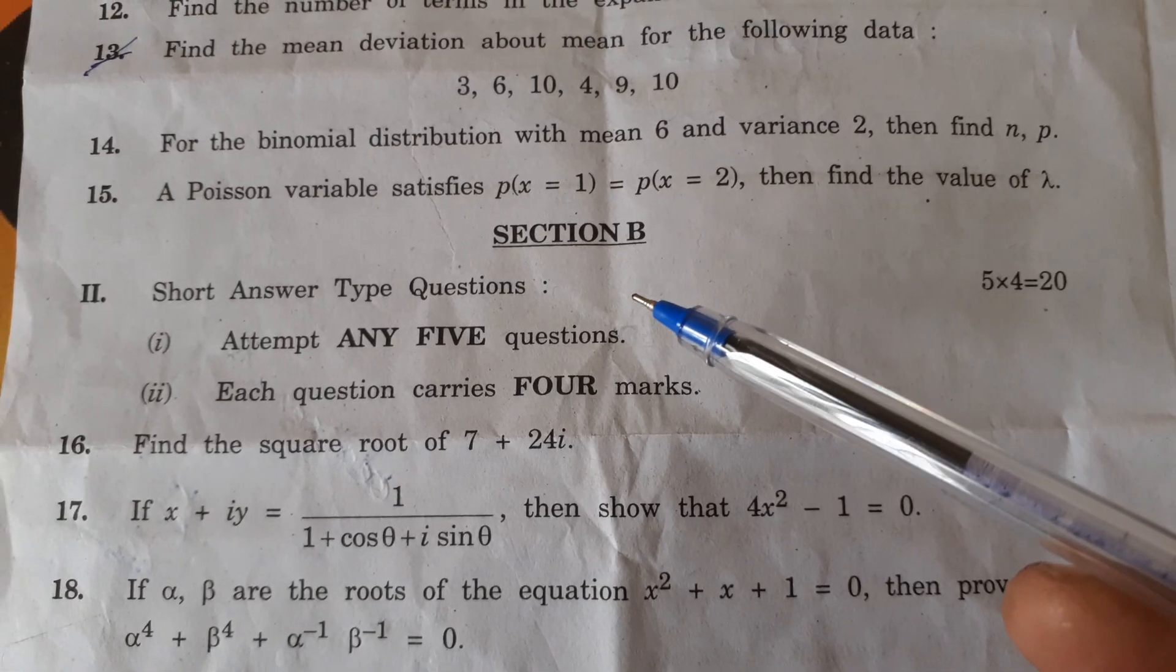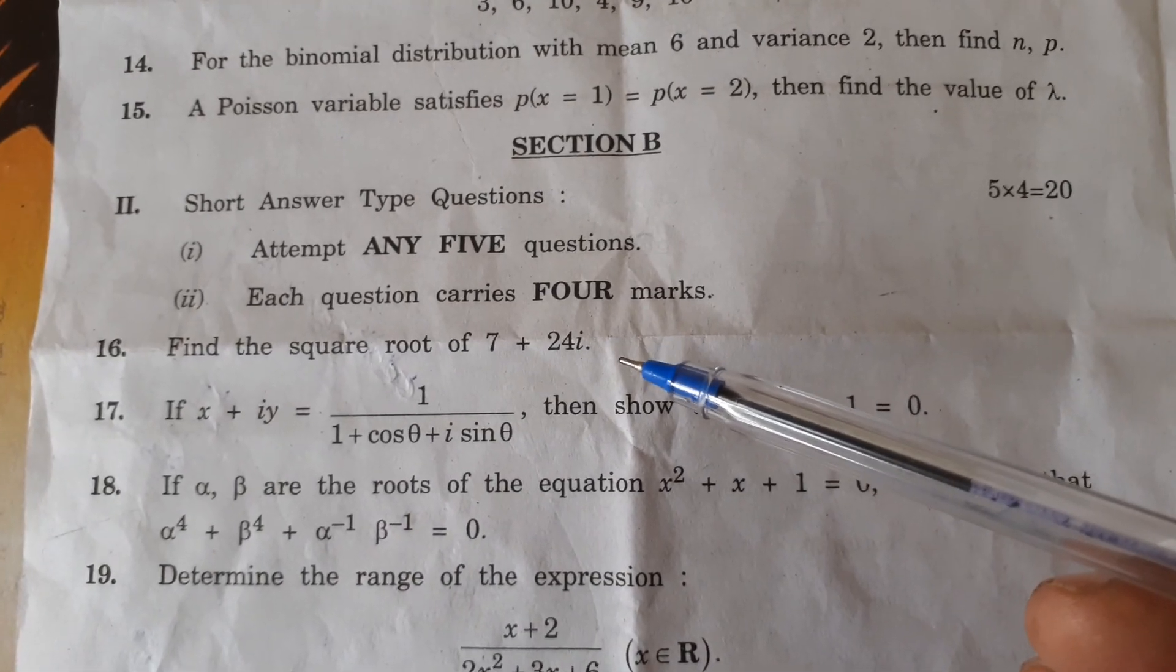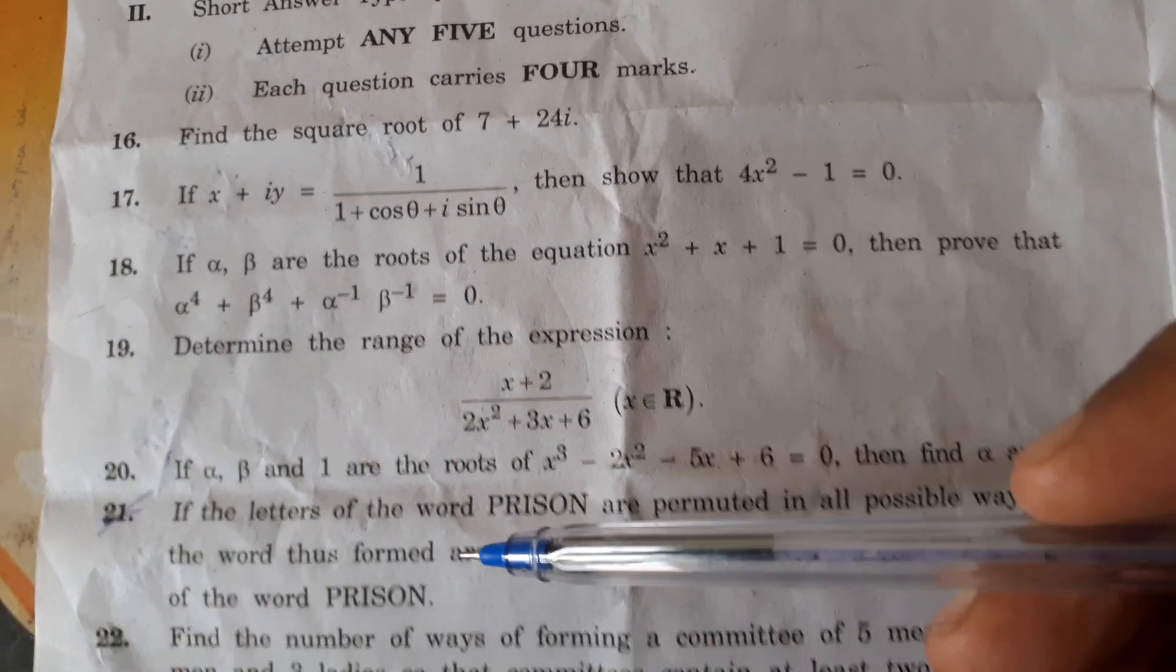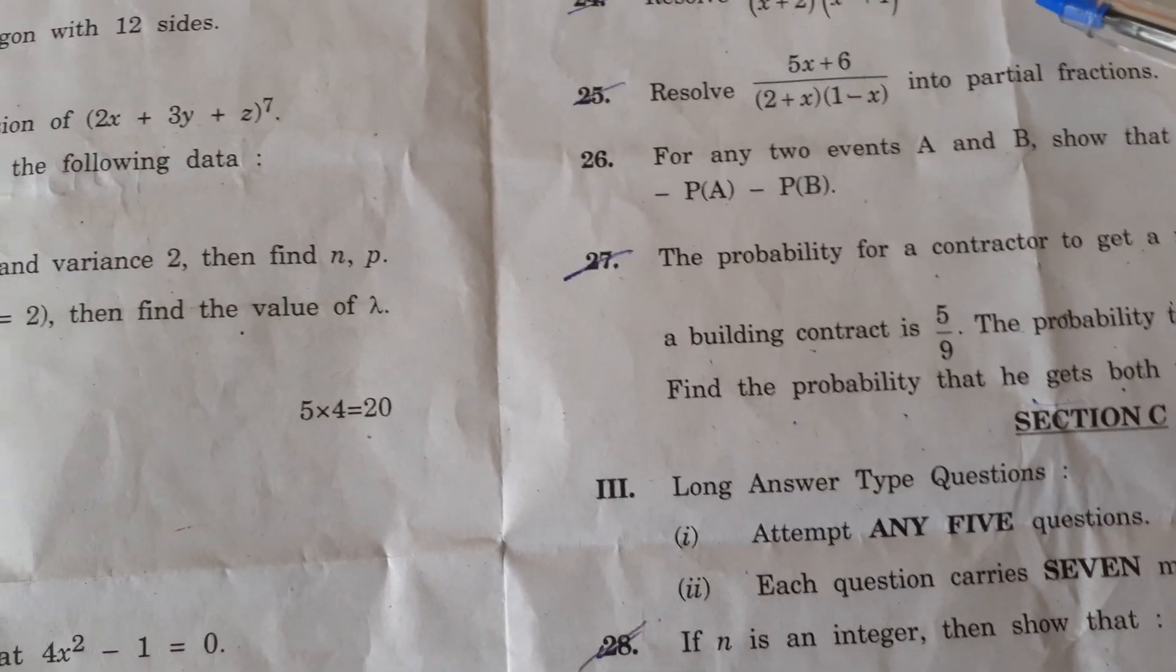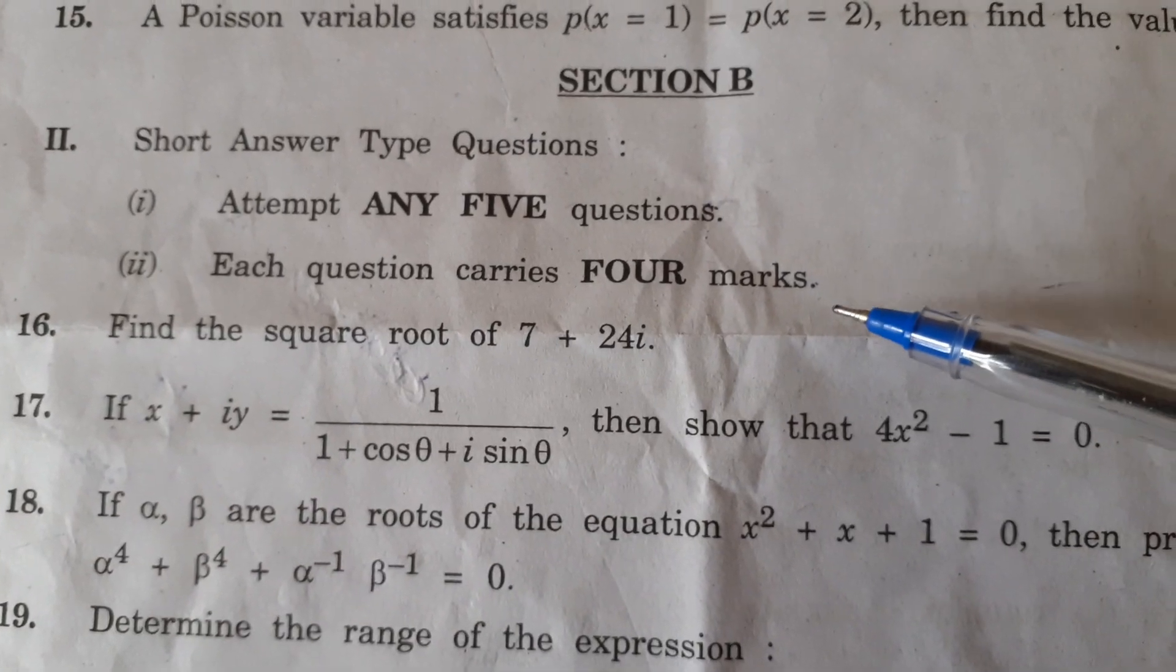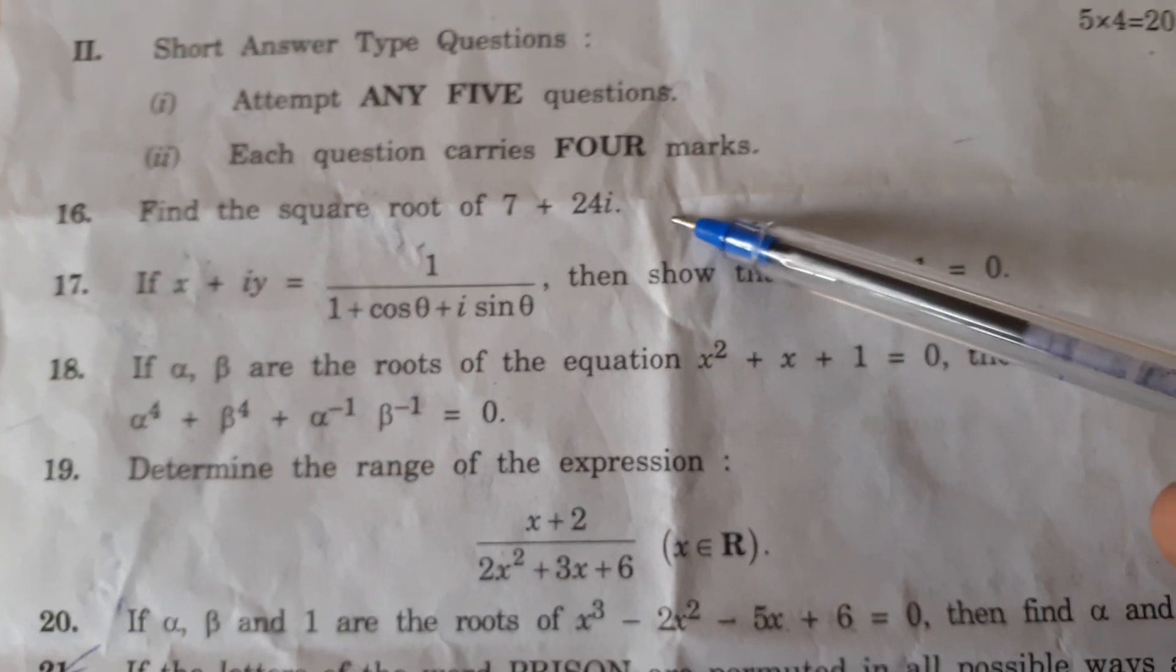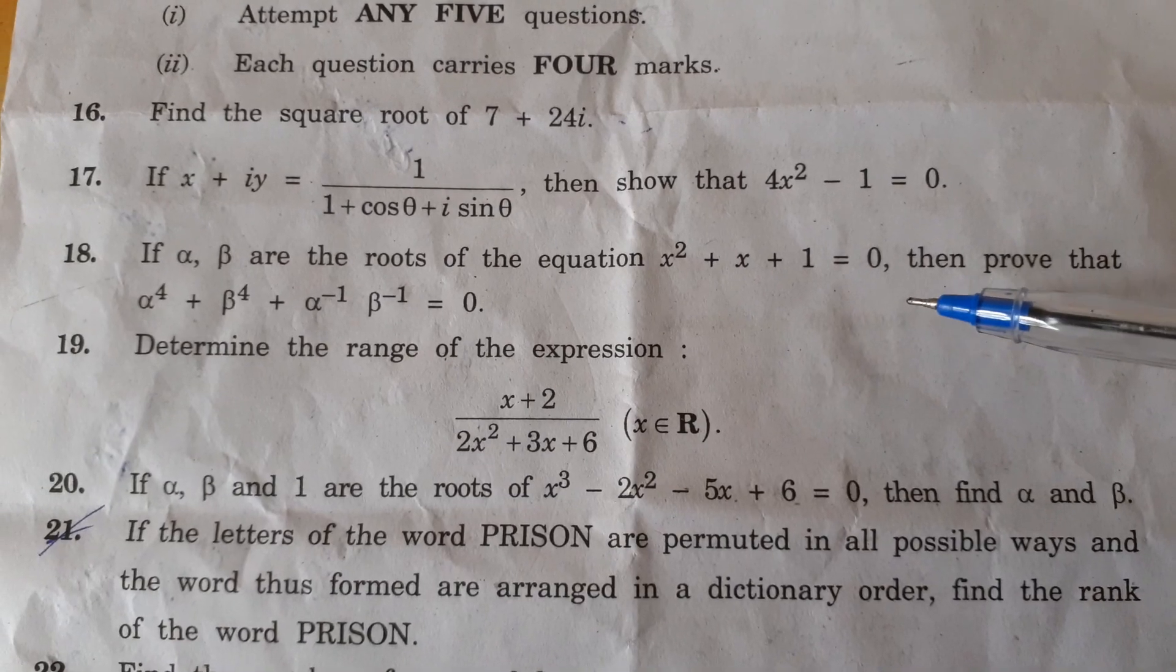Section B now, short answer type questions, attempt any 5 questions. So how many are given? 1, 2, 3, 4, 5, 6, 7, 8, 9, 10, 11, 12. So out of 12 answer any 5, each question carries 4 marks. SAQs question number 16 continuation, then 17, question number 18.